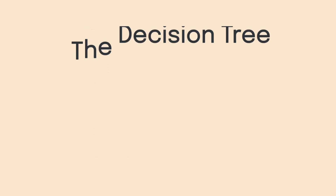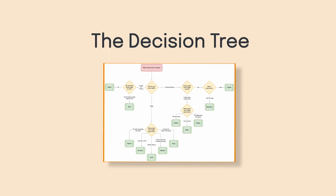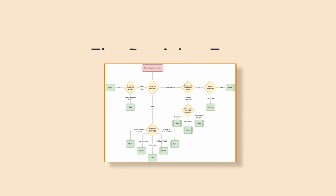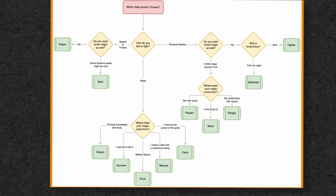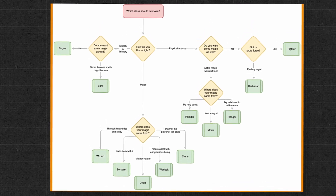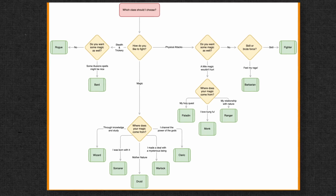Now at number three is the decision tree. A decision tree shows the various paths involved in making a decision. By seeing all your options laid out, you can weigh your options and carefully decide the best course of action to get to the desired goal. Here is a Dungeons and Dragons inspired decision tree: which class should I choose? I want to deal some physical attacks and a little magic wouldn't hurt — I think I'll pick the monk for my next campaign. And as you can tell, I am a Dungeon and Dragons master.